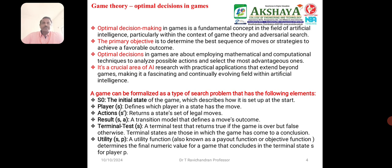A game can be formulated as a problem with the following elements: the initial state S0 describes how the game is set up at the start; Player(S) defines which player moves in a given state; Action(S) returns the set of legal moves available; and Result(S, A) is the transition model that defines the outcome of a move.